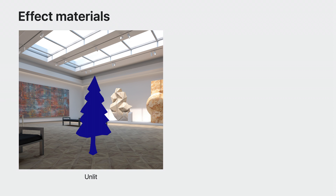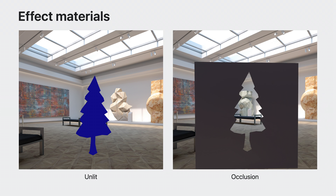Two additional material shader types are supported. First is the Unlit Shader, which lets you create objects that take on a solid color or texture unaffected by lighting. The second is the Occlusion Shader, which lets pass-through show through the object. You can use the Occlusion Shader with World Mesh data to help your content feel more integrated with the real world.